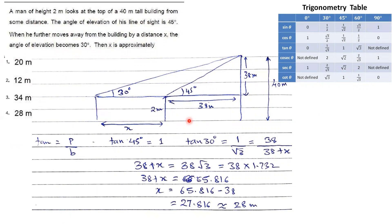From this pictorial diagram, the height of the building is 40 meters and the height of the person is 2 meters and his line of sight is 45 degrees. From the trigonometric table, tan 45 degrees is equal to 1. So the effective height is 40 minus 2, which is 38 meters. Since tan theta equals perpendicular by base and tan 45 = 1, the base length equals 38 meters — meaning the person is standing 38 meters away from the building.